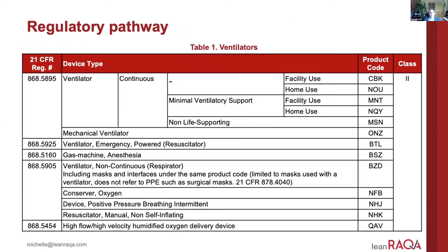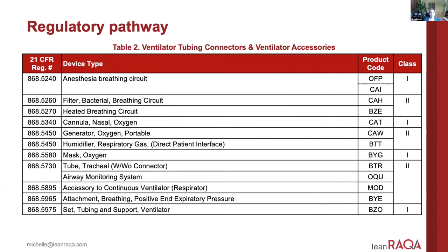The EUA authorization letter shows how many different product codes, definitions, and regulations exist for ventilators — all of these happen to be class 2 products requiring a 510K. For ventilator tubing connectors and ventilator accessories, there are still many different regulations and product codes, and these can be class 1 or class 2 products with a variety of requirements.